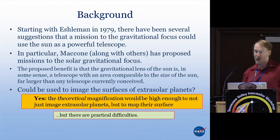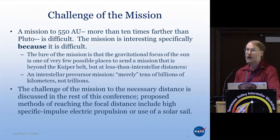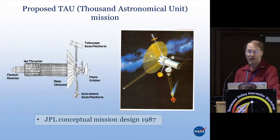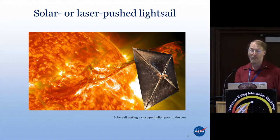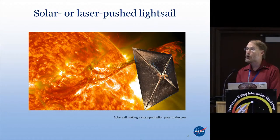But there's practical difficulties here. The challenge of the mission is tough. 550 AU is difficult, but it is interesting to us precisely because it's difficult. There's not a whole lot to look at this far from the sun, so it is a potential interstellar precursor. Even back in 1987, JPL did a conceptual design for this — the thousand astronomical unit mission. Here's something perhaps a little bit better: the idea of solar or laser-pushed light sails. Greg Matloff has been talking about a solar sail coming in very close to the sun to get high-intensity sunlight to push it out toward the gravitational lens.